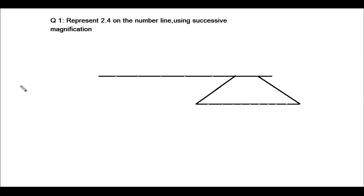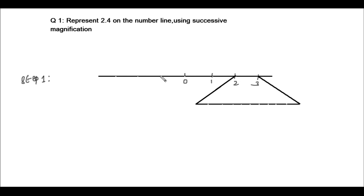Let's discuss one simple question first: represent 2.4 on the number line. To save time, I have drawn the number line. As part of step 1, we will draw the number line and represent numbers on it. The midpoint indicates 0, positive numbers are on the right hand side, and negative numbers on the left hand side.